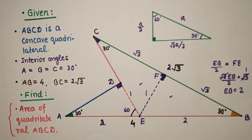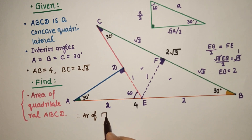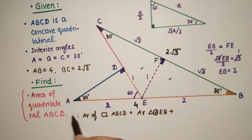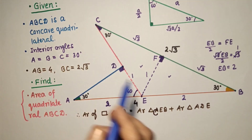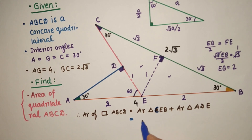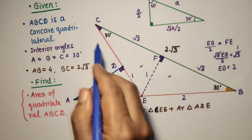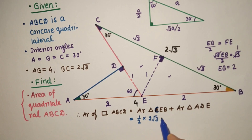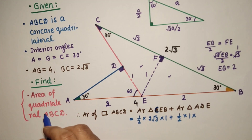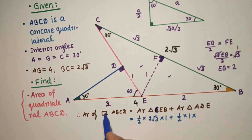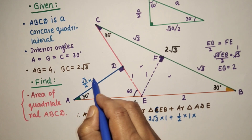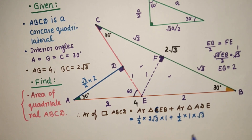So the area of quadrilateral ABCD equals the area of triangle CEB plus the area of triangle ADE. Area of triangle CEB equals half times base BC times height. BC is 2 root 3, and height EF is 1. Plus half times base DE which is 1, times height AD. AD is the side opposite to 60 degrees, so it is root 3 by 2 times the hypotenuse 2, giving AD equal to root 3.